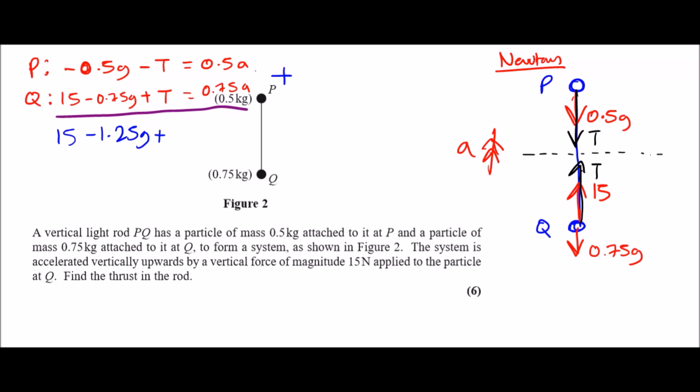And adding the two accelerations you should get 1.25a. Finally, making a the subject, dividing 1.25 across, you should get exactly 2.2 meters per second squared. And that's it, we've done acceleration.